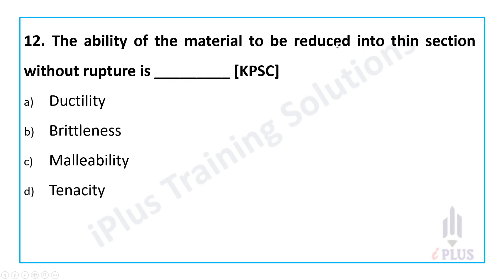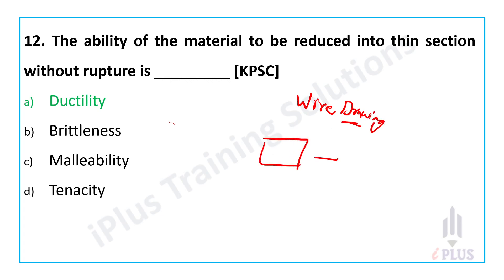The ability of a material to be reduced into thin sections without rupture is known as ductility. Think of this as a wire drawing operation — a larger rod of material is converted into a very small cross-section area or wire by making it pass through dies. So ductility corresponds to wire drawing.